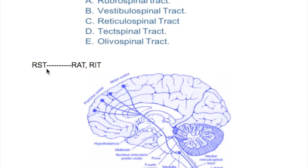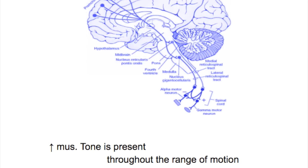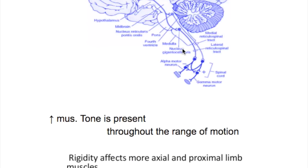There are two types of reticulospinal tracts: the reticular activating tract and the reticular inhibitory tract. The reticular activating tract starts from the pons as the medial reticulospinal tract and is excitatory in nature, whereas the reticuloinhibitory tract starts from the medulla as the lateral medullary spinal tract. The medullary reticulospinal tract inhibits the alpha and gamma neurons in the anterior horn cells, whereas the pontine reticulospinal tract is excitatory to both alpha and gamma motor neurons.